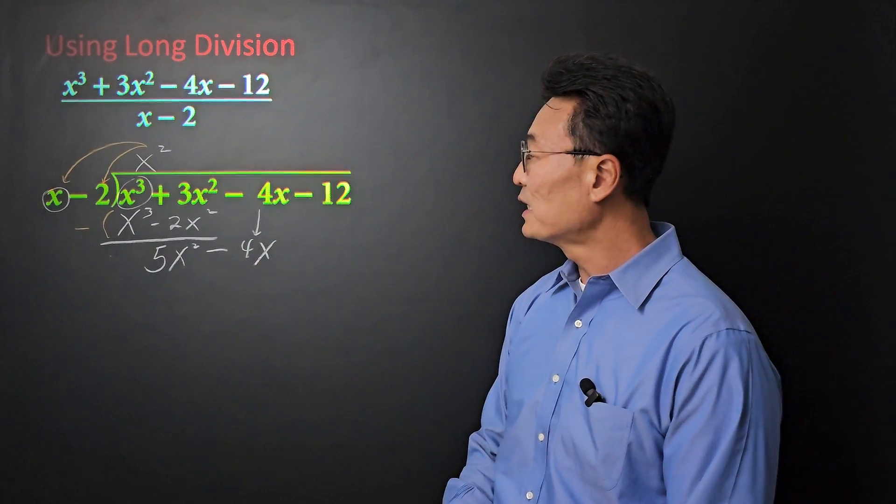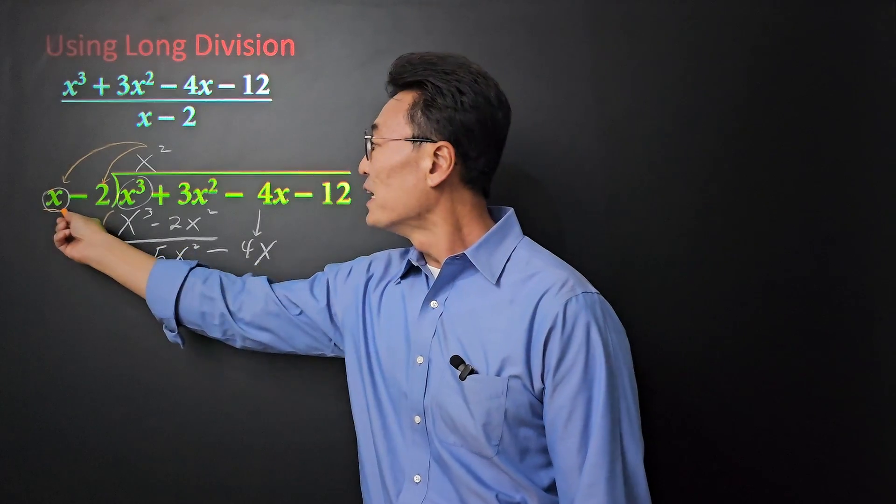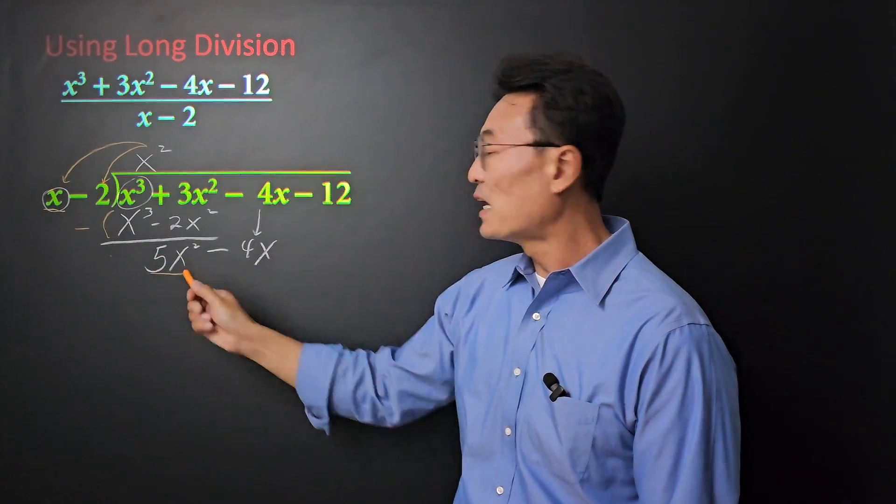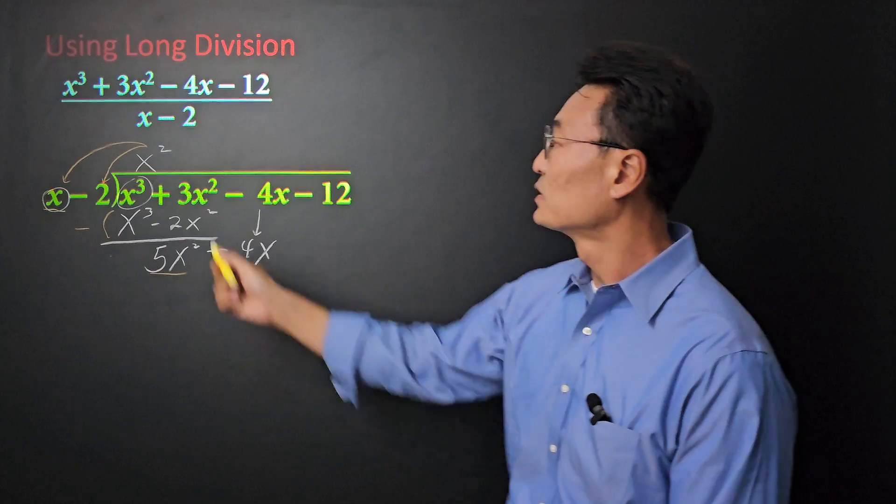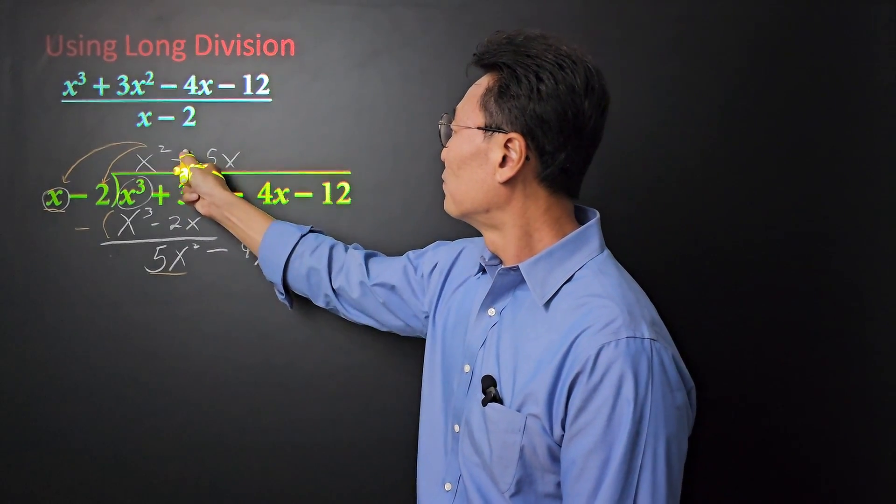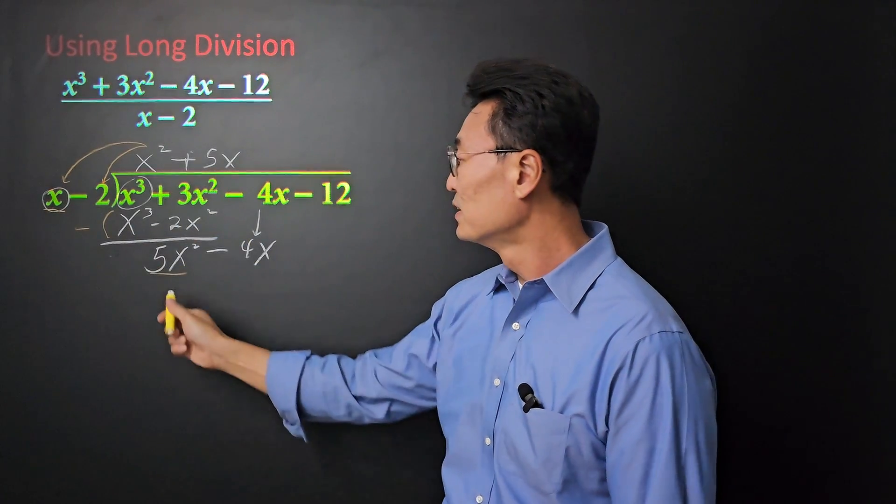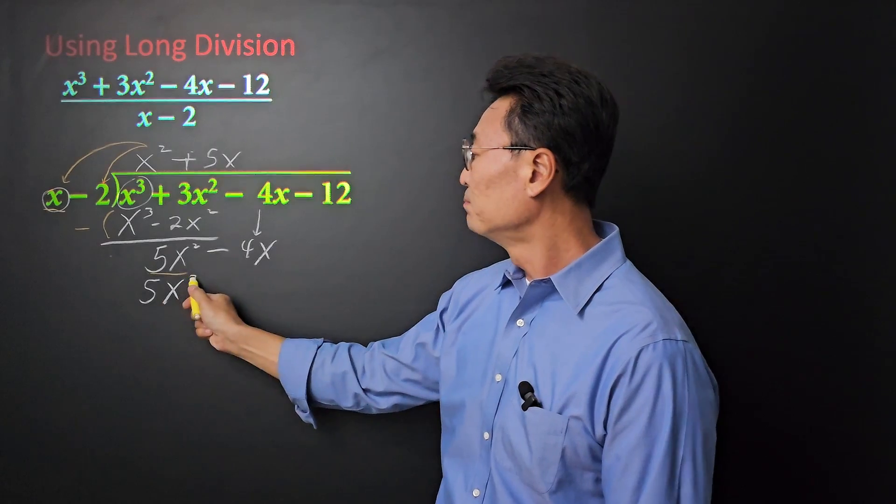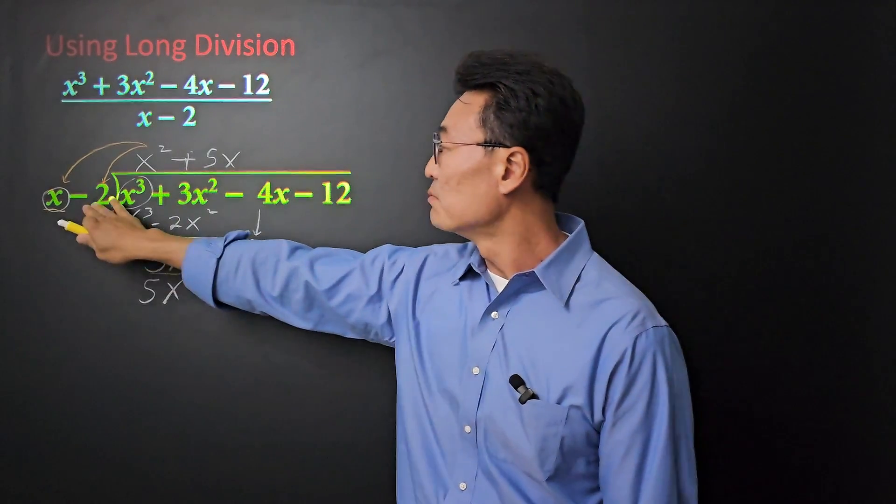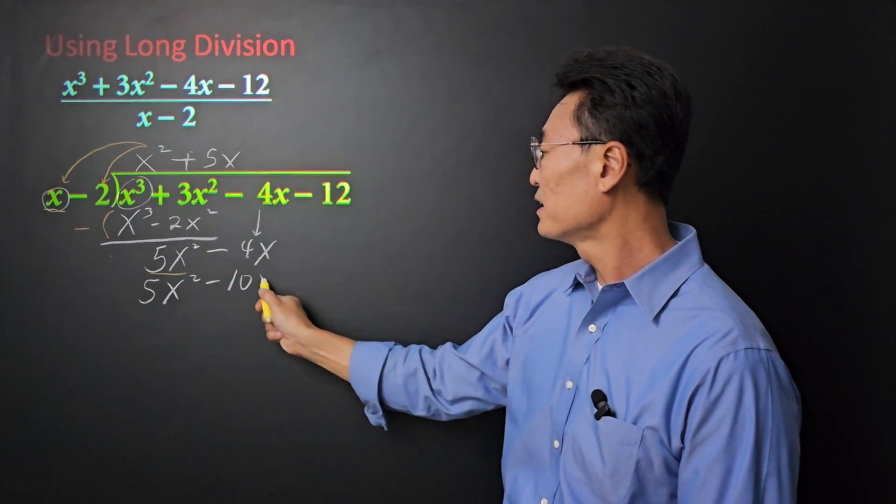Next, we're going to bring down the negative 4x. Once again, we want to find out what times x will give us the 5x squared. And that's going to be plus 5x. We take that 5x, multiply it to the x, we get 5x squared. And 5x times negative 2 will give us negative 10x.